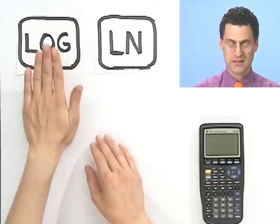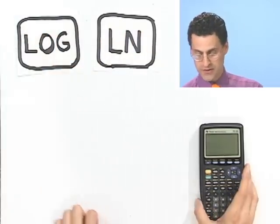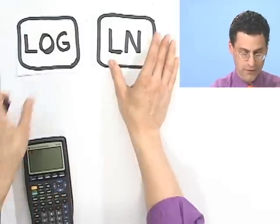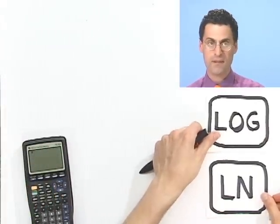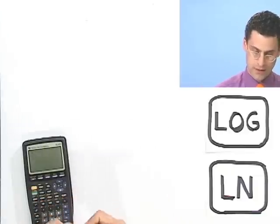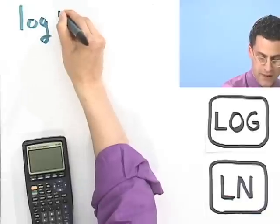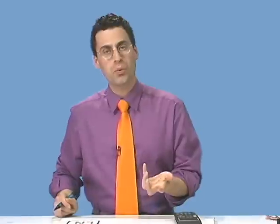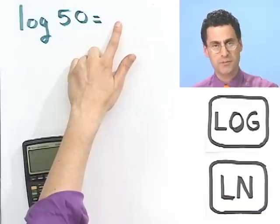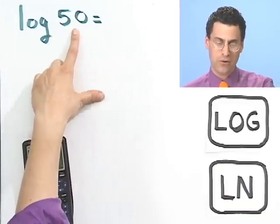So in fact, these two keys, you can press them and they'll just report the values. So let's try some examples. If you wanted to find the log of 50, which of course means log base 10 of 50. Which means what, by the way? It means, what is the exponent I have to raise 10 to in order to make it 50?